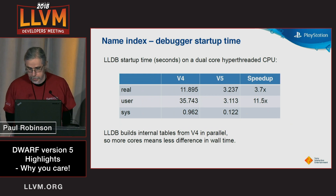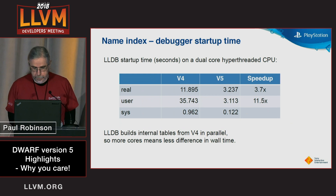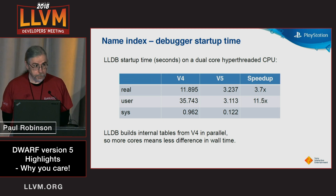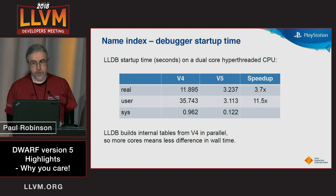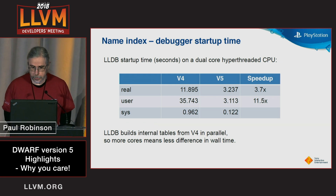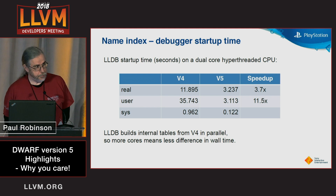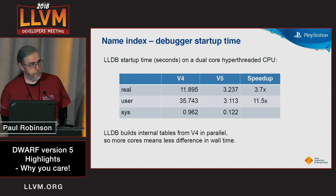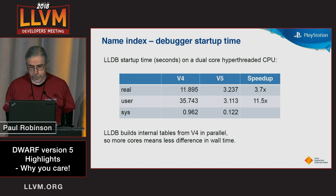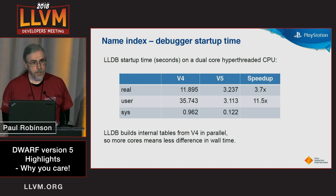He went in and did some measurements. We had a 4x speedup in wall clock time on a dual-core hyper-threaded CPU. Because LLDB builds its internal table in parallel, if you're using version 4, you'll have less speedup if you have more cores — but I'm okay with having smaller machines have a better speedup.